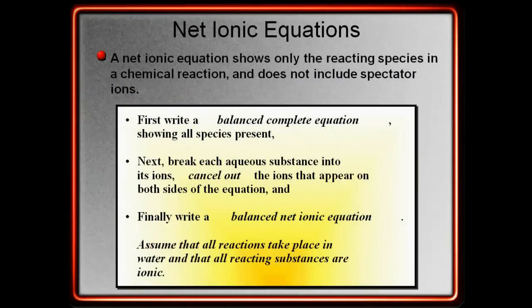So, again, let's recap these steps in writing balanced net ionic equations. First, you're going to write a complete balanced equation. This is with the compounds intact. Then, you're going to break each of the aqueous substances into the ions, canceling out any spectator ions. Once you've canceled out the spectator ions, you're going to finally write a balanced net ionic equation. That is the end of our net ionic equation video. Please make sure that you remember the steps in writing net ionic equations, because we're going to have plenty of practice in class.